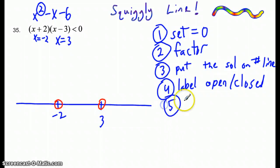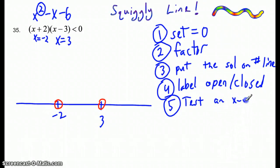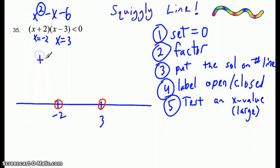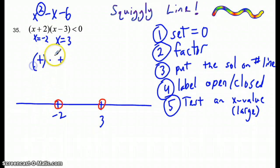The fifth step is to test a point — test an x value. I usually test a very large x value, at least larger than the largest x value on this line, which is 3. So I'm going to plug in 4. So 4 plus 2 is 6, that's positive. 4 minus 3 is 1, which is positive.